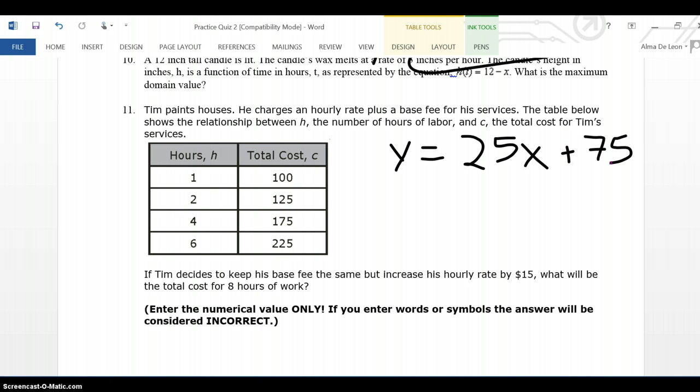Right here, Tim decides to keep his base fee. The base fee in this case would be 75. But he is going to increase his hourly rate by $15. The hourly rate in this case happens to be 25. Remember that rate for slope is rate of change. In this case, the slope is an hourly rate. The slope always goes in front of x.